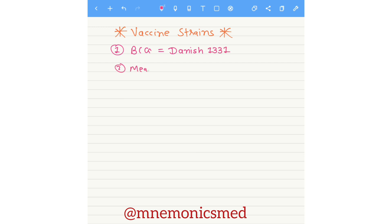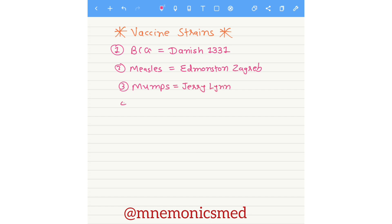Now we are learning about measles. Its vaccine strain is Edmonston Zagreb, so you have to remember Edmonston Zagreb as the vaccine strain for measles. Now we are learning about mumps — its vaccine strain is Jeryl Lynn. You can easily remember Jeryl Lynn via Tom and Jerry — Jerry Lynn for mumps.